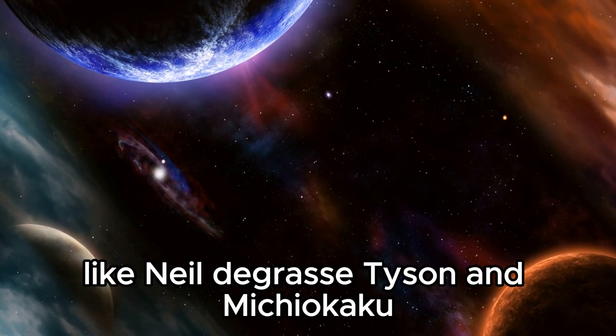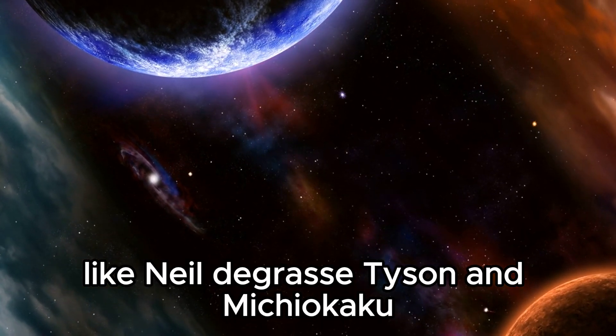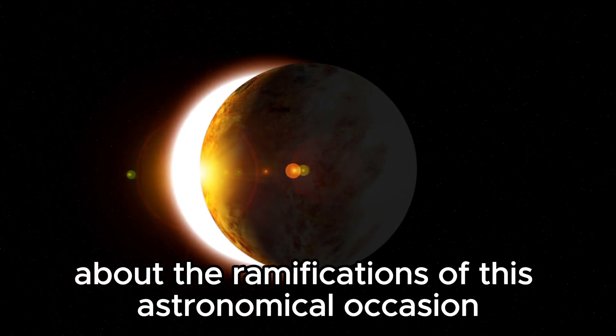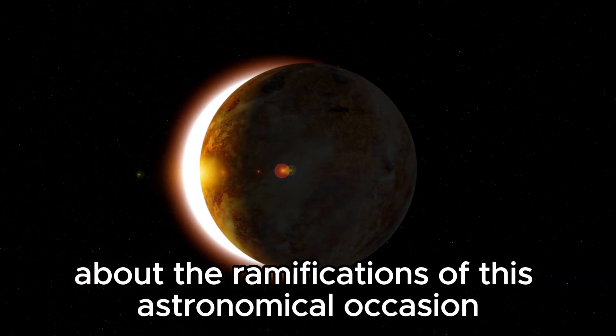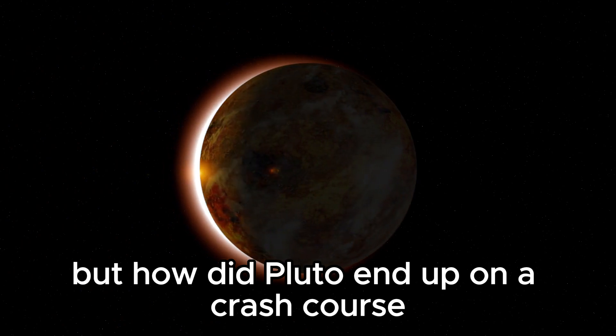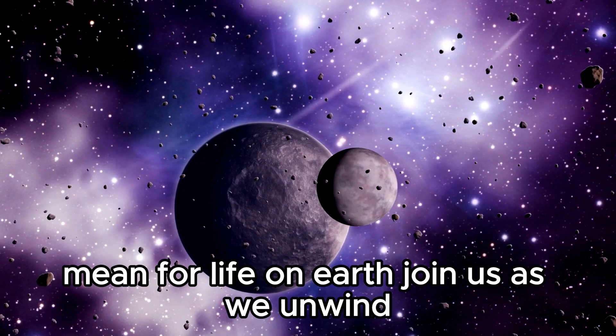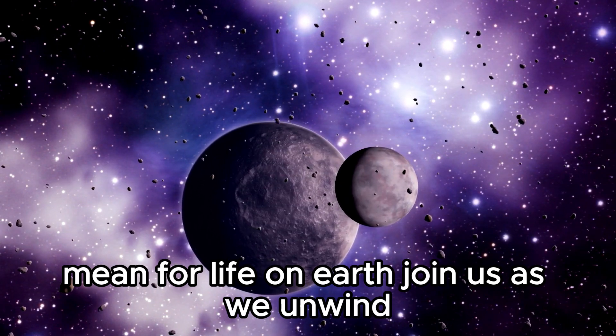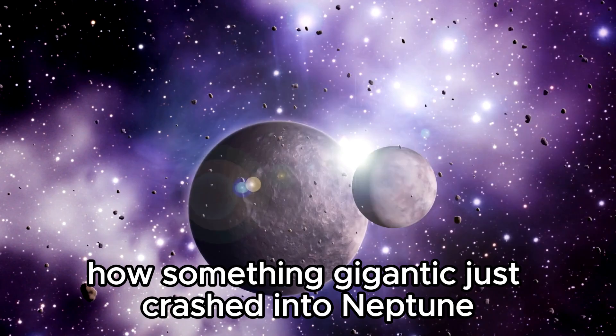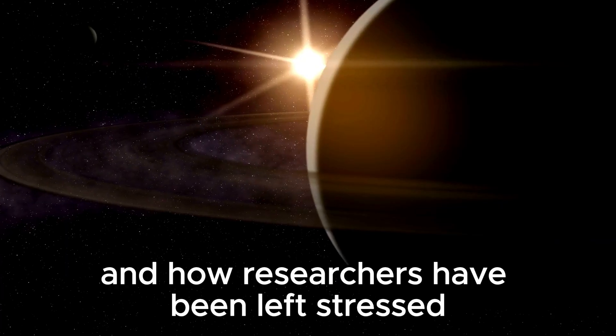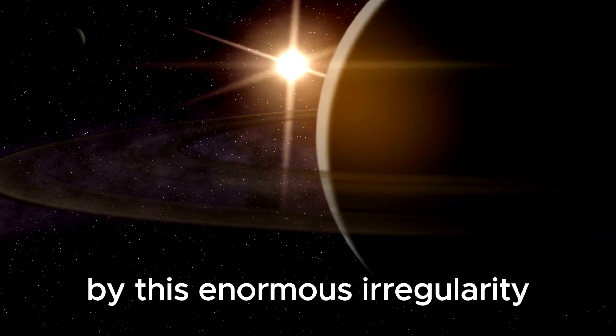Prominent figures like Neil deGrasse Tyson and Michio Kaku have sounded alerts about the ramifications of this astronomical event. But how did Pluto end up on a crash course with its neighboring planet, and what could this celestial conflict mean for life on Earth? Join us as we unravel how something gigantic just crashed into Neptune and how researchers have been left stressed by this enormous irregularity.